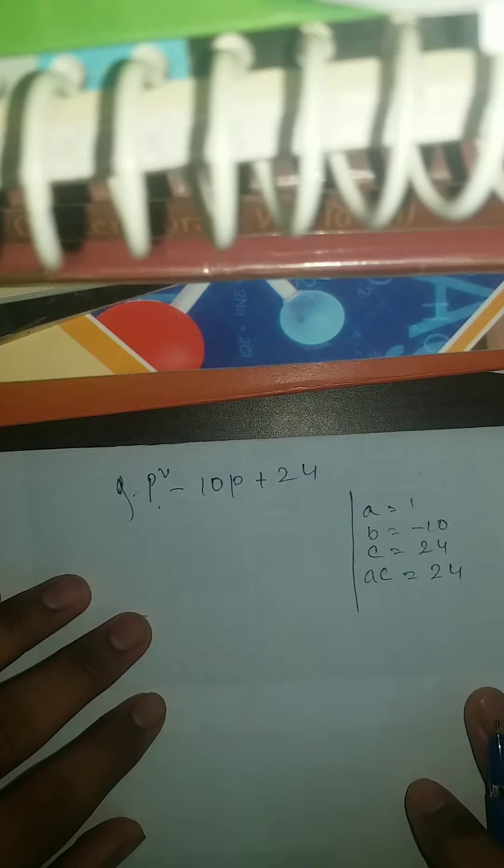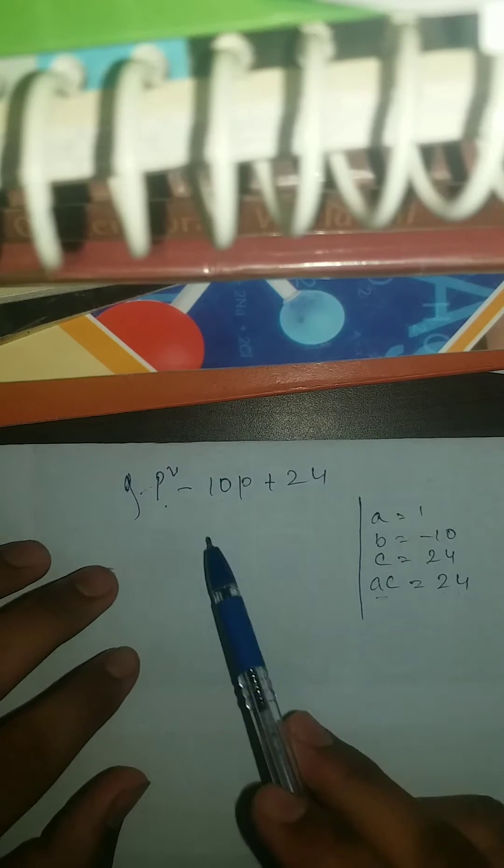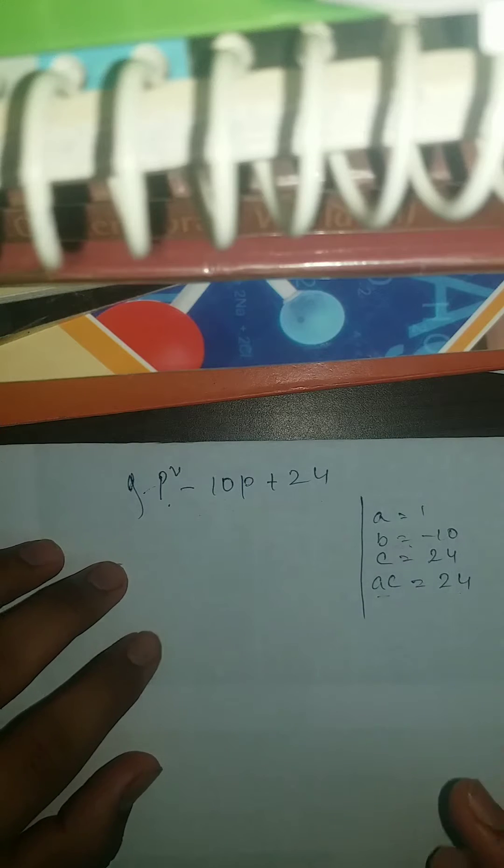So now here we need two numbers that if we multiply them, we will get AC, it means 24. And if we subtract or add them, we will get minus 10. It means B. Understood?